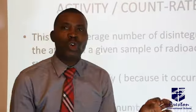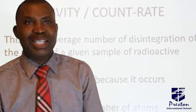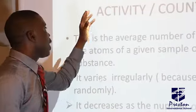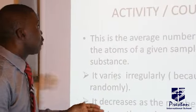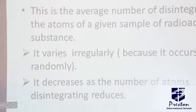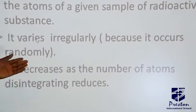The disintegration occurs randomly. You cannot predict which atom will disintegrate. As disintegration occurs, the average number that disintegrates is what we call activity, or we'll call it the count rate. We say it varies irregularly because it occurs randomly, and then it decreases as the number of atoms disintegrates.